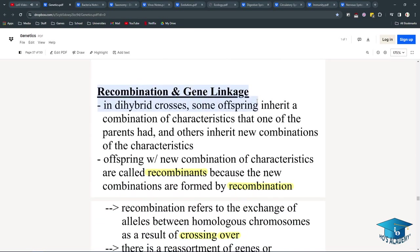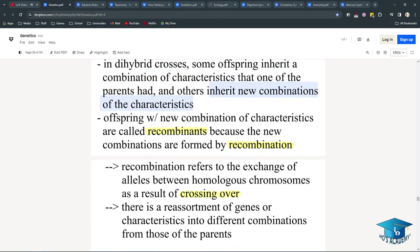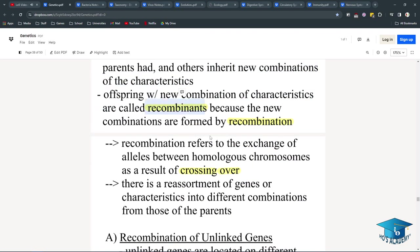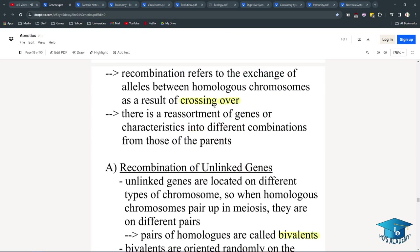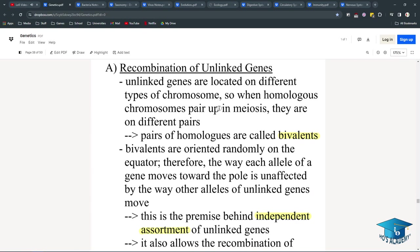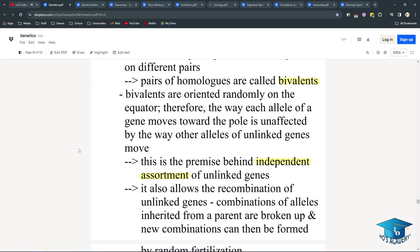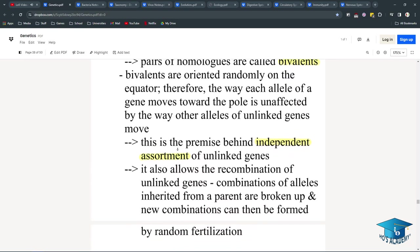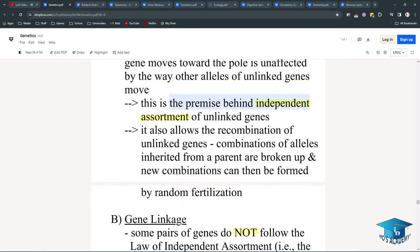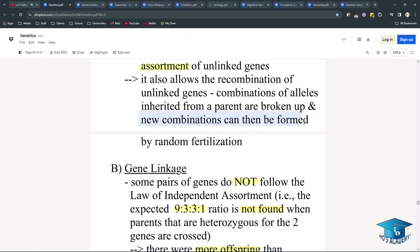Recombination and gene linkage. In dihybrid crosses, some offspring inherit a combination of characteristics that one of the parents had. So gene linkage means that they might inherit new combinations of characteristics that the parents did not have, and they'll be called recombinants. Because they're formed by recombination, so the parents did not have them, but the children do. And sometimes it's a result of crossing over for genetic diversity. The recombination of unlinked genes are located on different types of chromosomes. So when homologous chromosomes pair up in meiosis, they are on different pairs. These pairs of homologues are called bivalents, and bivalents are oriented randomly on the equator, meaning when they line up in metaphase, which means that the allele of a gene moves towards the pole unaffected by the other ways, the ways of the other unlinked genes. This is the premise behind independent assortment of unlinked genes. It also allows the recombination of unlinked genes. Combinations of alleles inherited from a parent are broken up, and new combinations can then be formed by random fertilization.